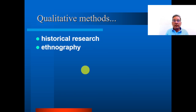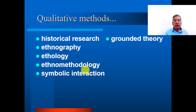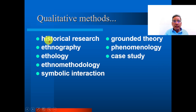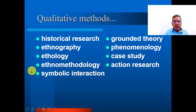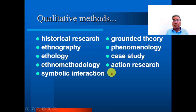Now I will discuss different types of qualitative methods. The first method is historical research, ethnography, ethnology, ethnomethodology, symbolic interaction, grounded theory, phenomenological, case study, and action research. These nine are qualitative research methods.